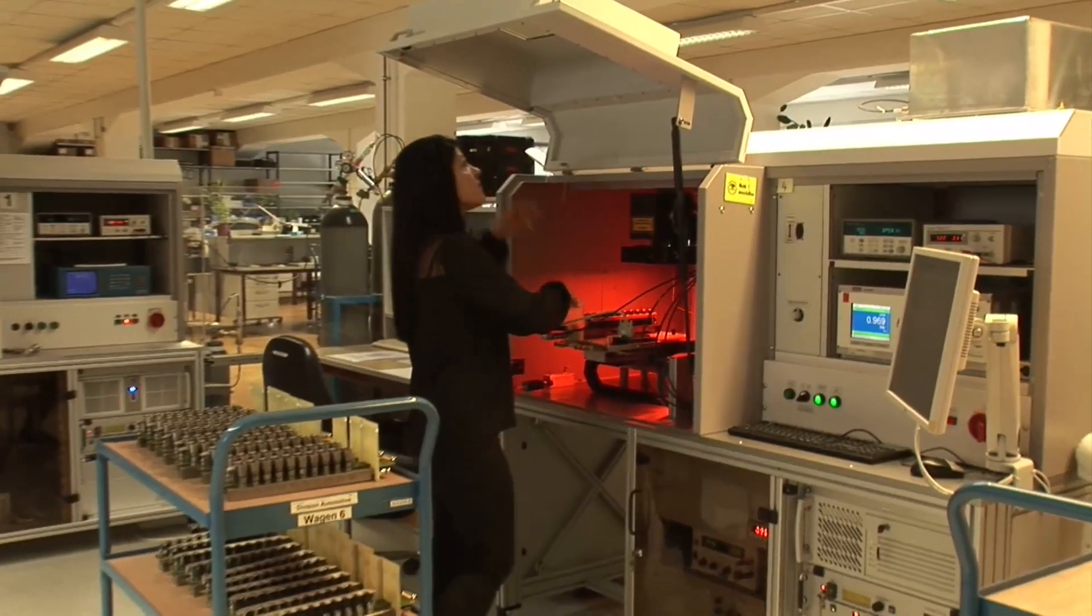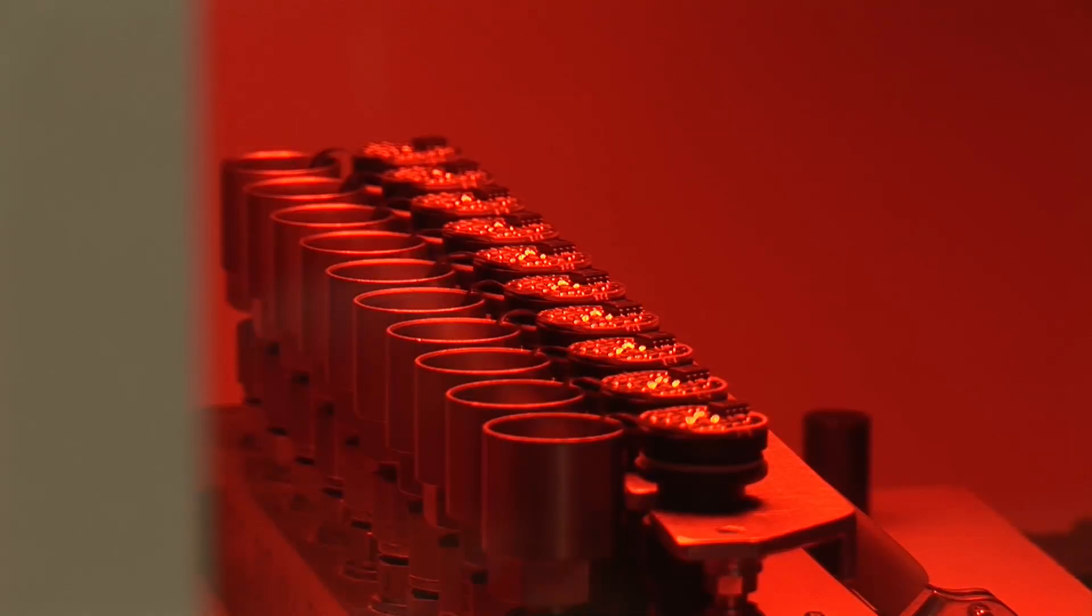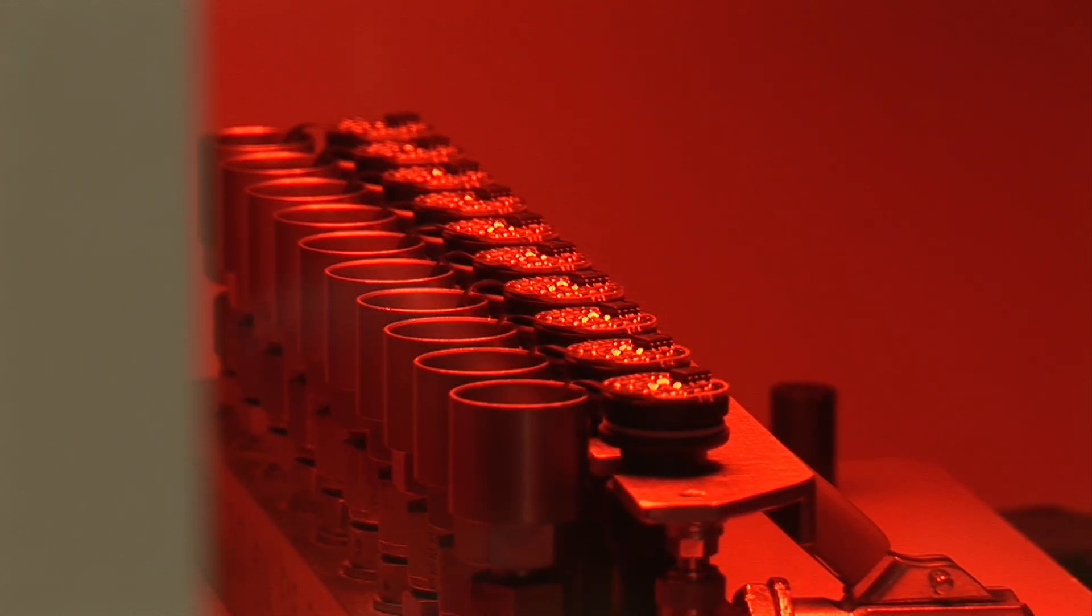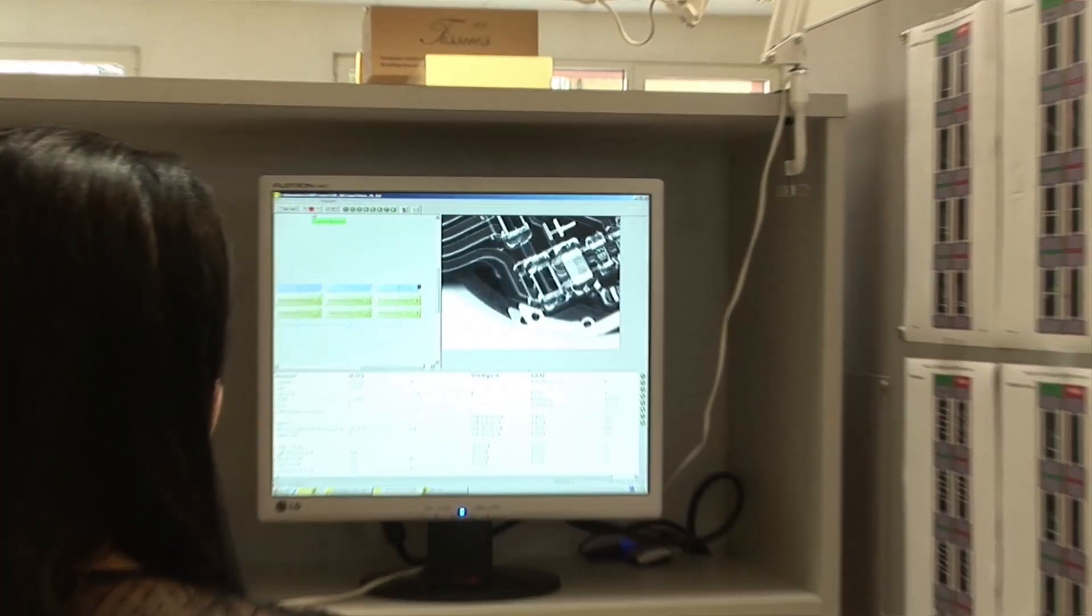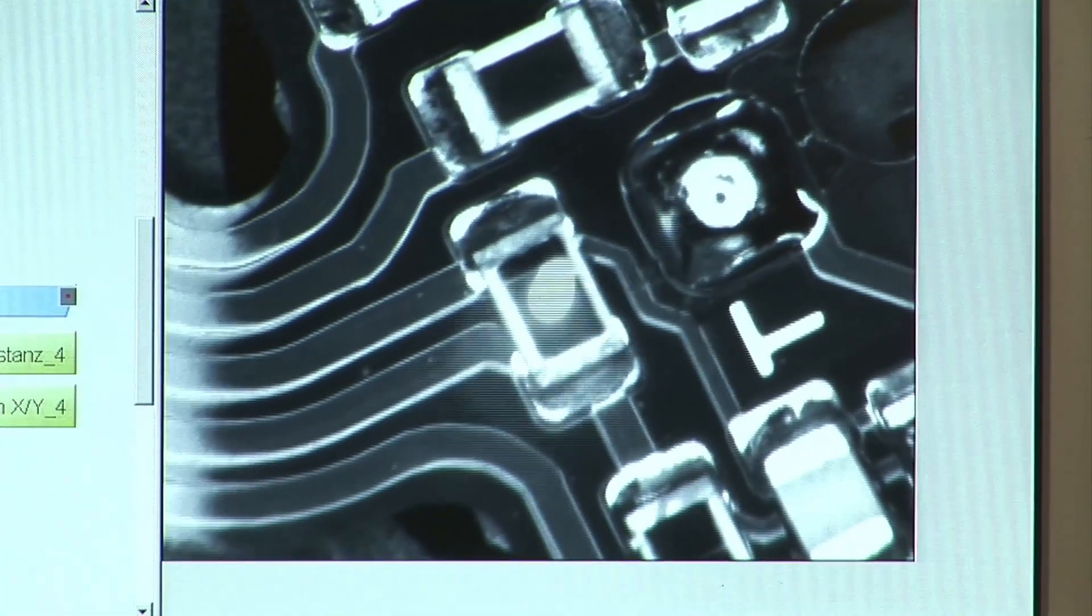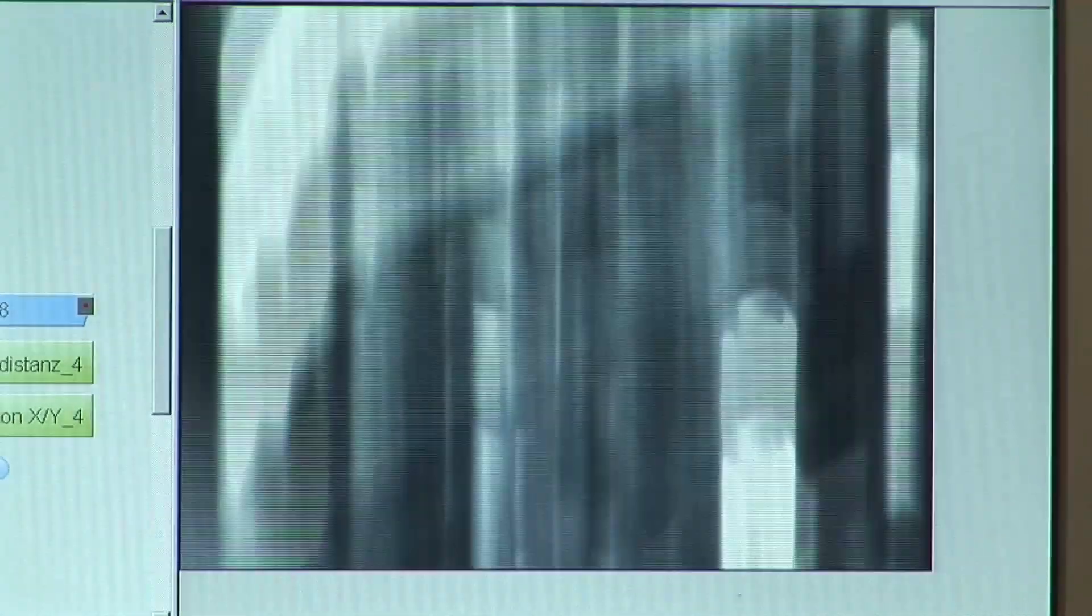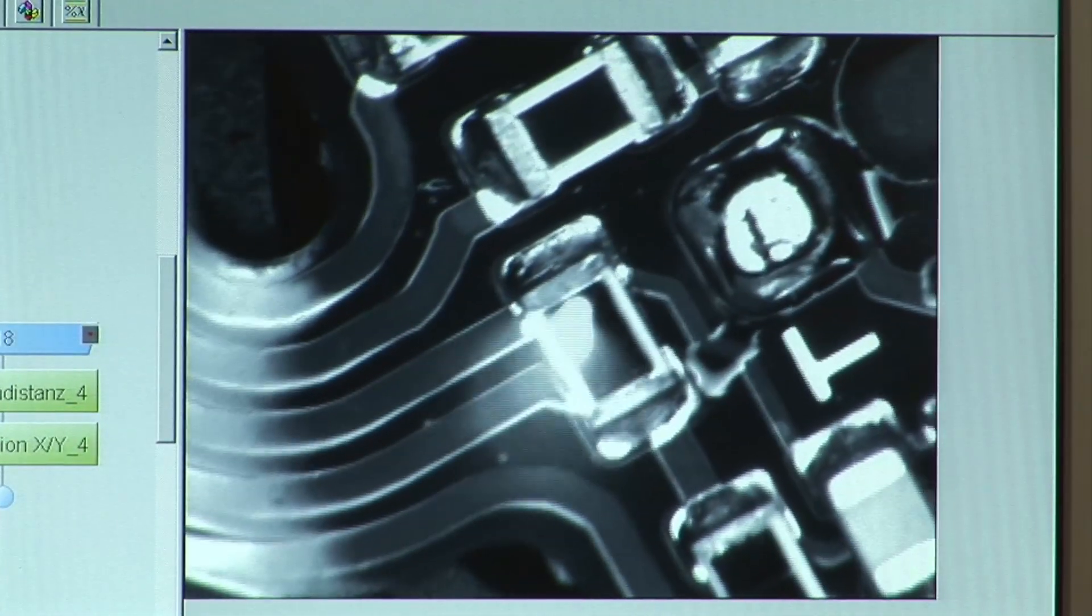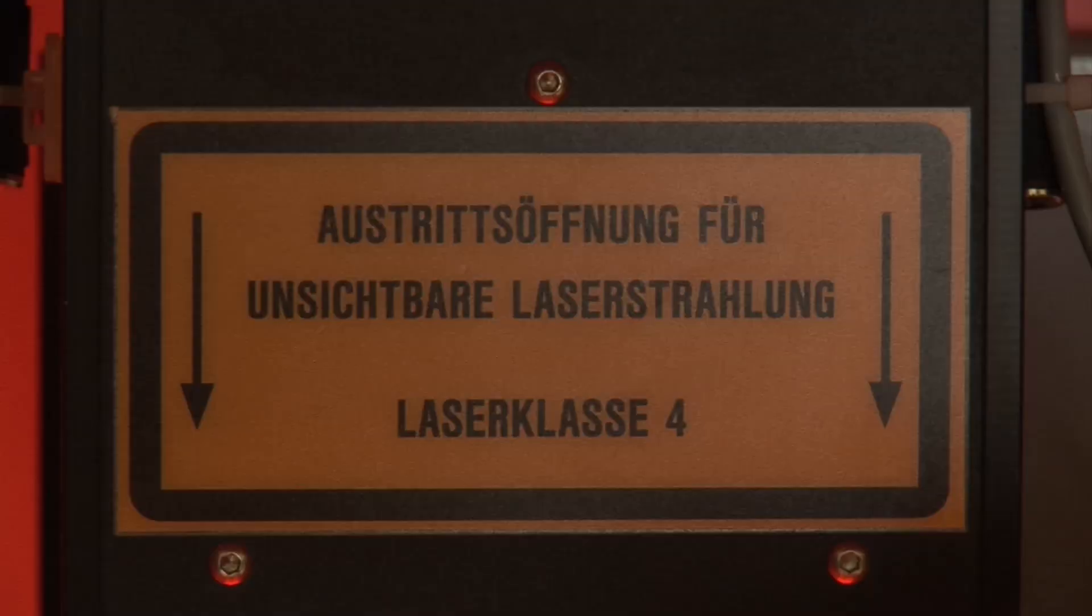The electronics and compensation are configured by machine. The pressure sensors are inserted into the measuring station on pressure bars and are subjected to different levels of pressure. Meanwhile, a control computer compares the value measured with the pressure applied and varies the properties of the electronic circuit using a laser beam until the two values are identical.